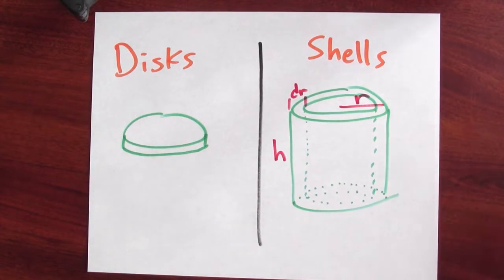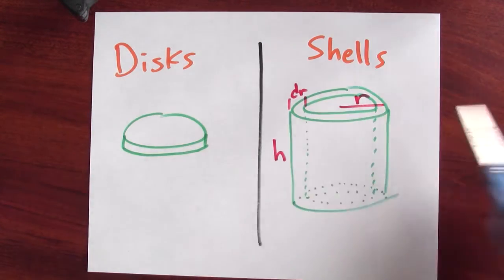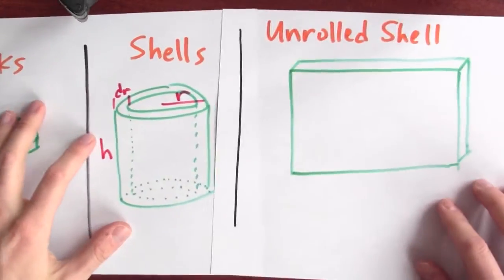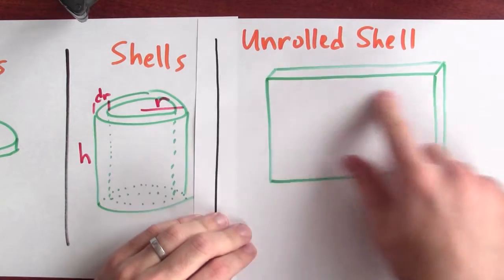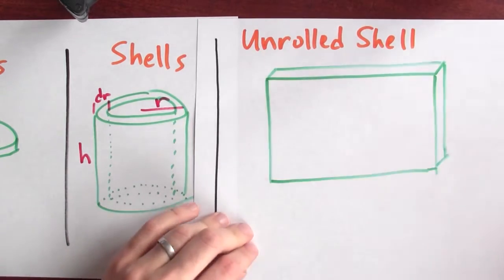Now, if I get out my scissors of mathematics here and cut the shell, you might imagine unrolling the shell, and then you just end up with a slab like this. How big is this slab?